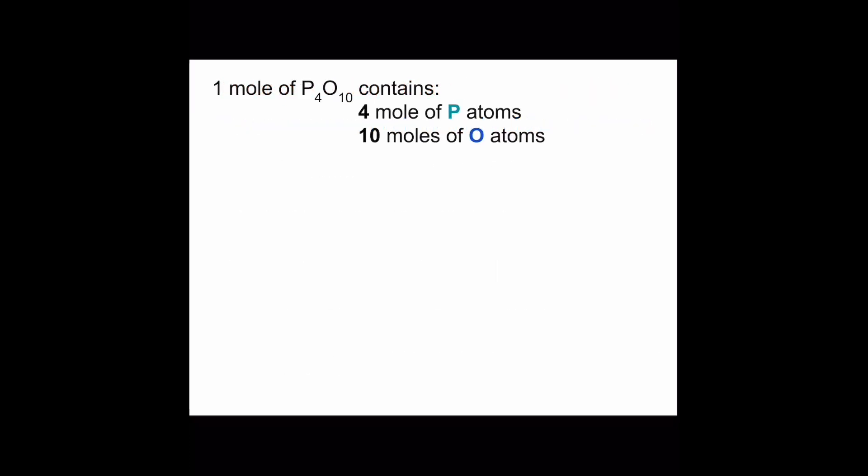One mole of tetraphosphorus decaoxide is made of 4 moles of phosphorus atoms and 10 moles of oxygen atoms. To calculate the gram formula mass of this compound, we take the molar mass of phosphorus from the periodic table and multiply it by 4, then add the molar mass of oxygen multiplied by 10.